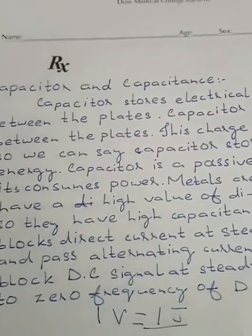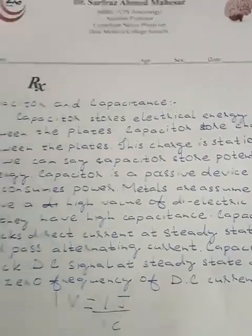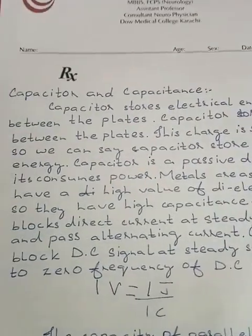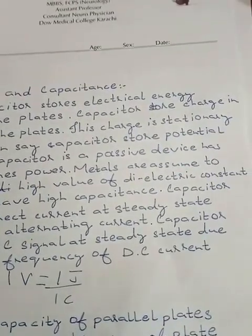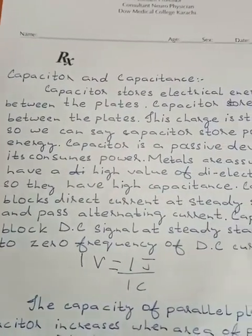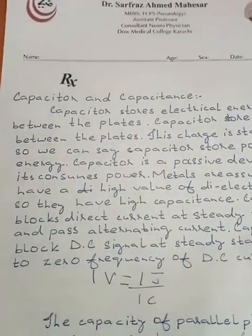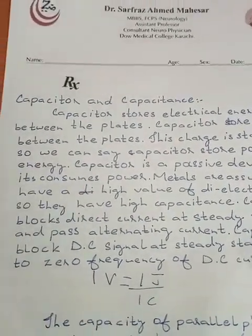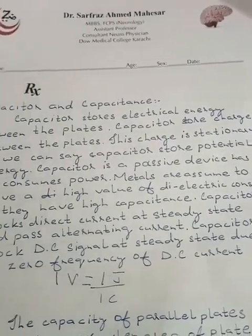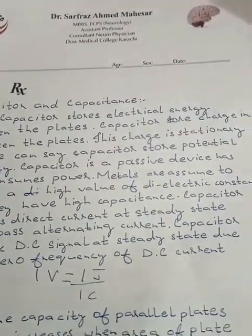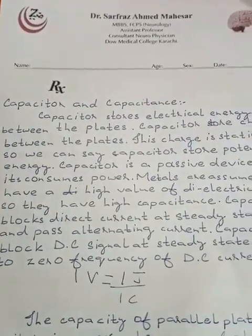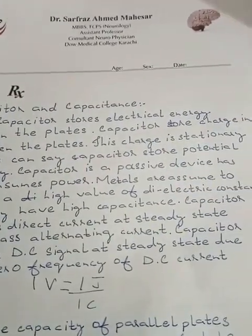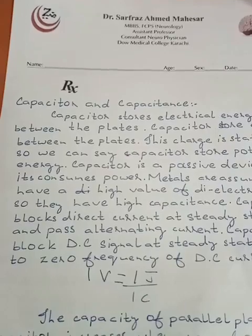Capacitor and capacitance: a capacitor stores electrical energy between its plates. The charge stored between the plates is stationary, so we can say a capacitor stores potential energy. A capacitor is a passive device — it consumes power. Metals are assumed to have a high value of dielectric constant, so they have high capacitance.